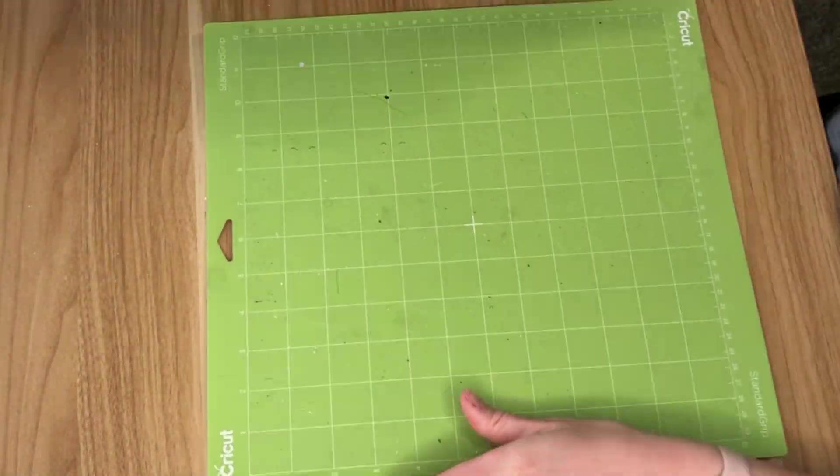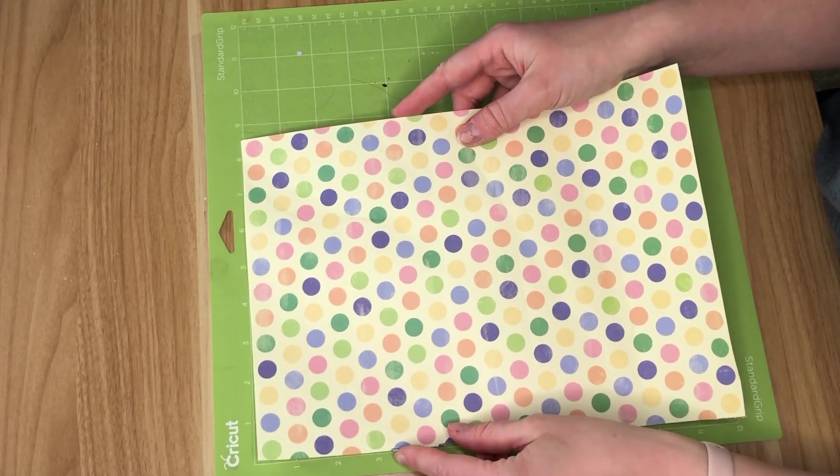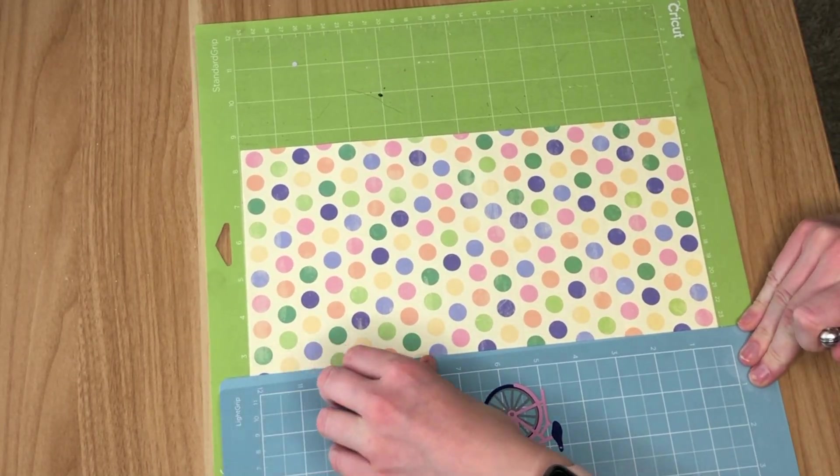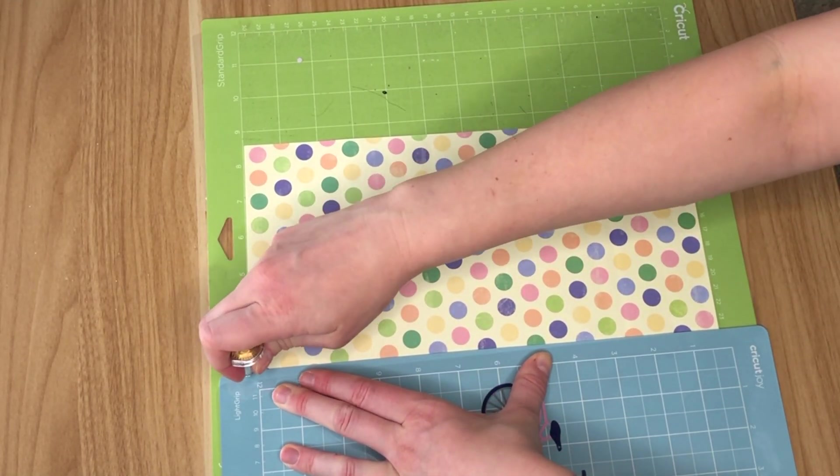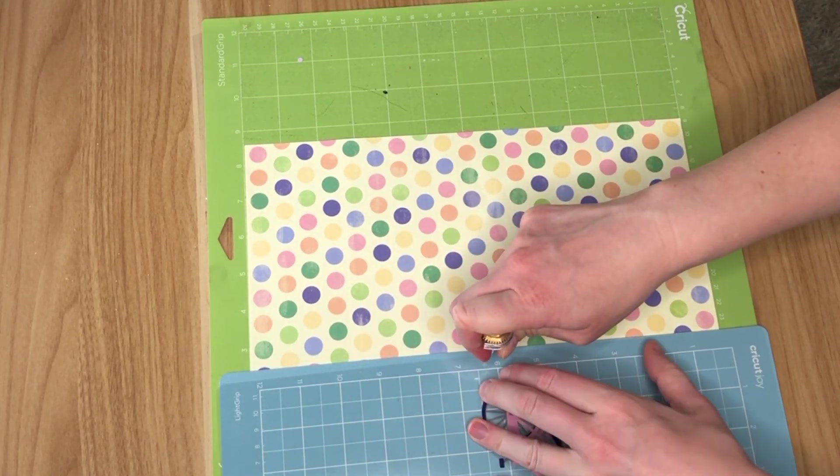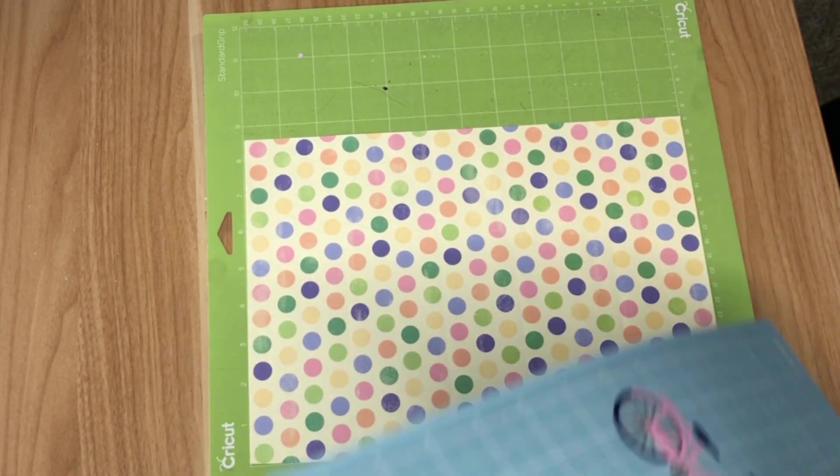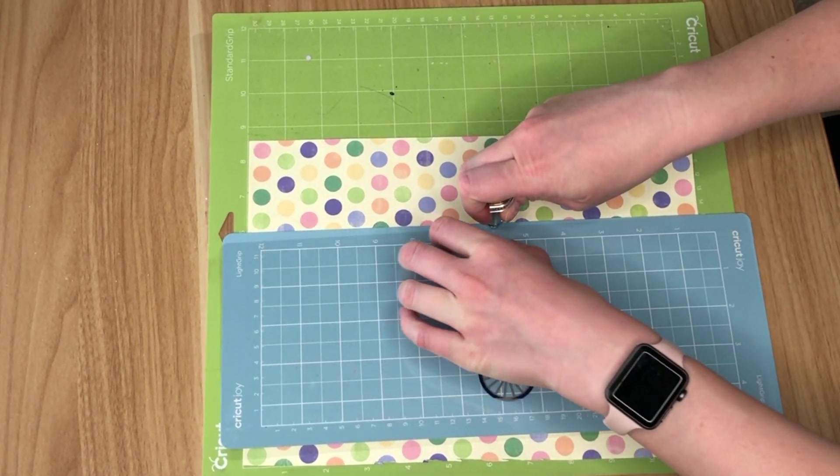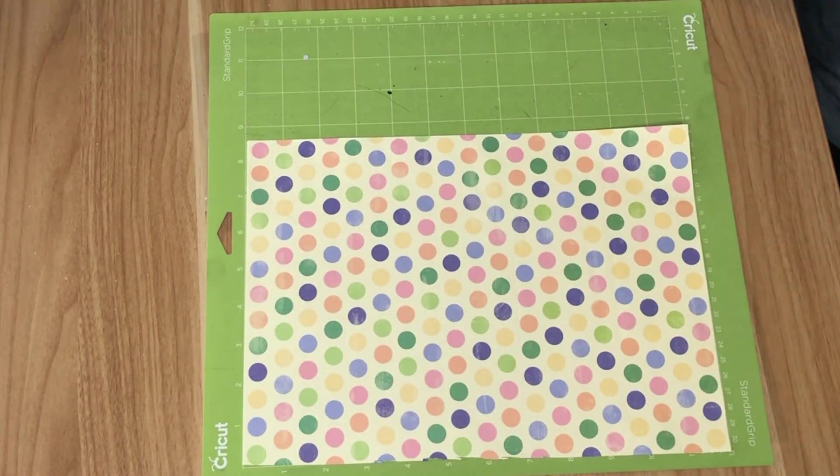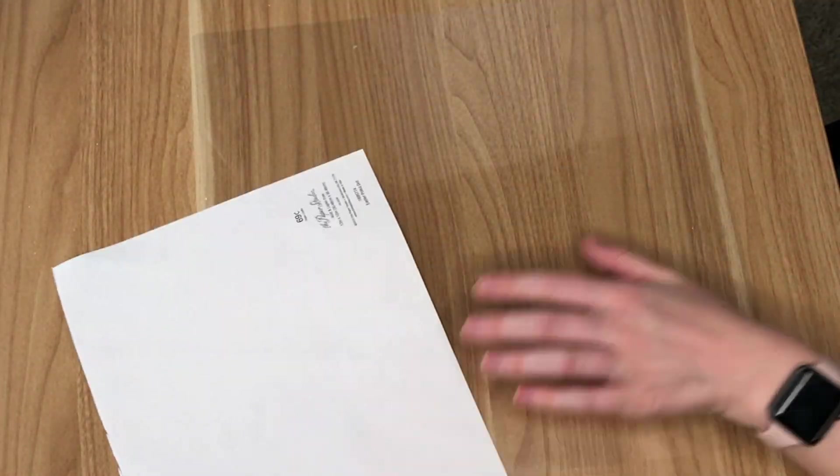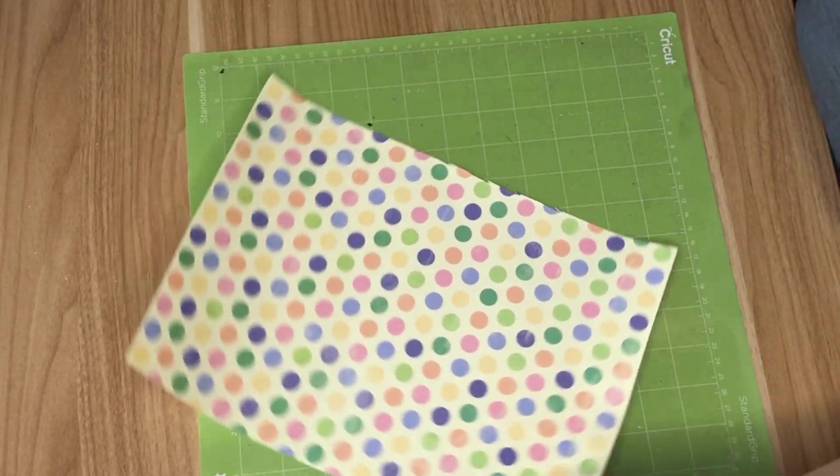And now we're going to be going parallel with the twelve inch side. So I repositioned my paper just so that I could see that grid, but you could just turn it if you have a different grid than me, or if you're a little bit better at your math and measuring. And for this one, again, we're scoring parallel to the twelve inch side, and I am scoring at two and a half inch and at six inch.